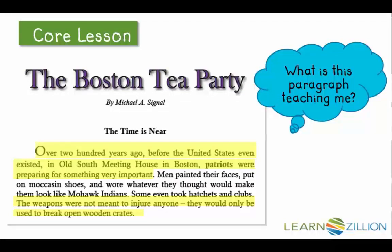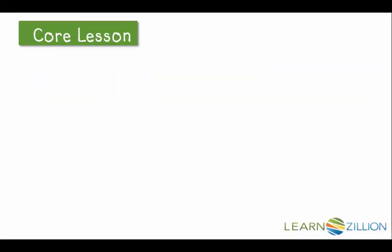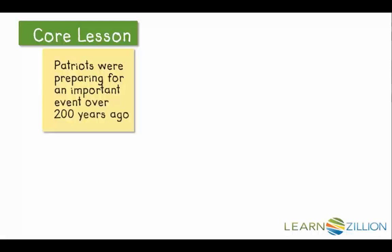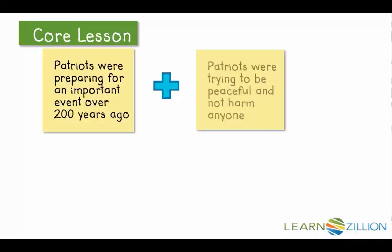My big takeaways here: this event happened over 200 years ago and it involved the patriots. But in that last sentence, I think the key thing to take away is that they weren't meaning to injure anyone. Perhaps people thought maybe they were. So now I'm going to go ahead and on my post-it notes, I'm going to summarize the first sentence of the paragraph, which essentially was that the patriots were preparing for an important event over 200 years ago. Then I'm going to add the summary of the last sentence, which was that patriots were trying to be peaceful and not harm anyone.